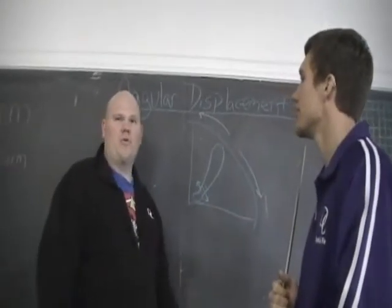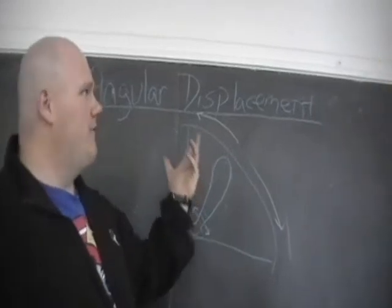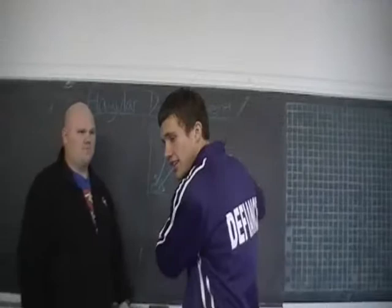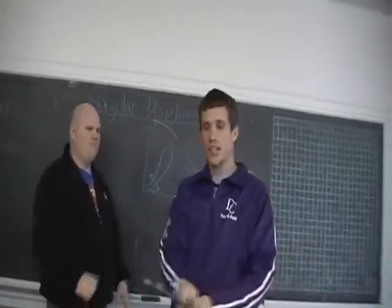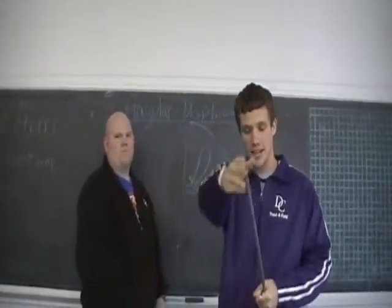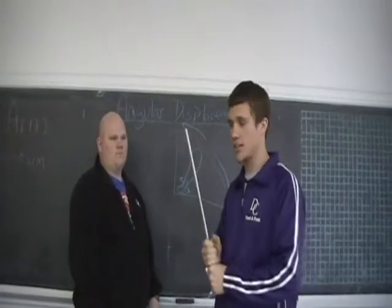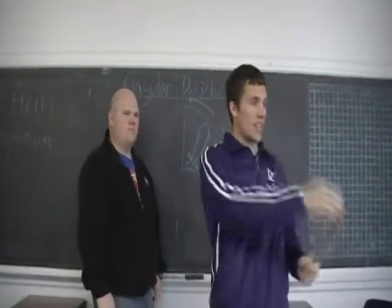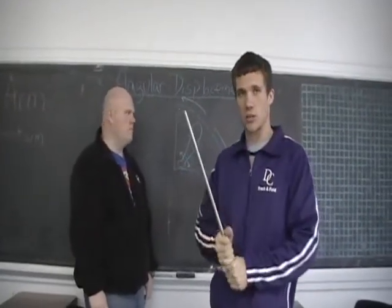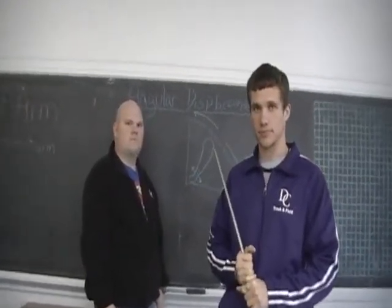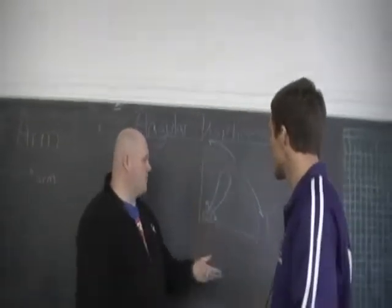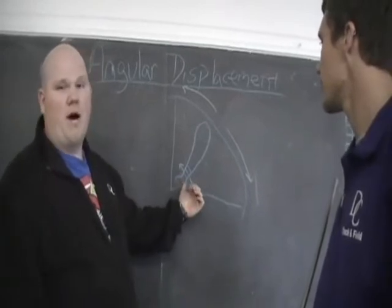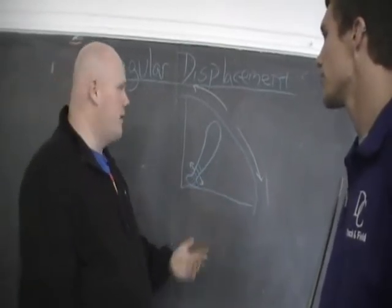To measure torque, there's a concept known as angular displacement. Angular displacement is the degrees or radians measured from the tip of a bat to the hands — they are the same. This differentiates from linear displacement, where one end might move ten inches and the hands only move three. Angular displacement captures the actual degrees traveled, so both the end and the bottom of the bat move 90 degrees.